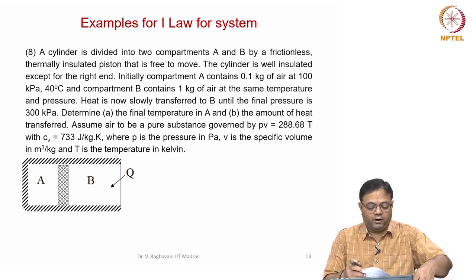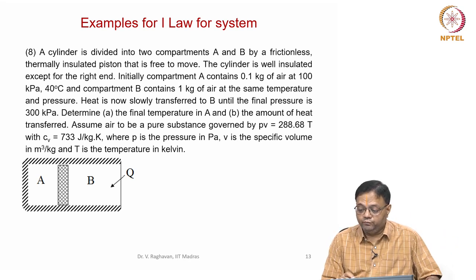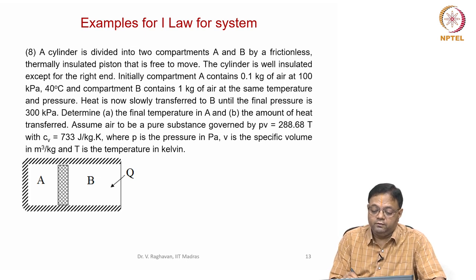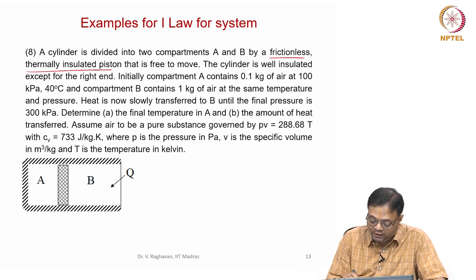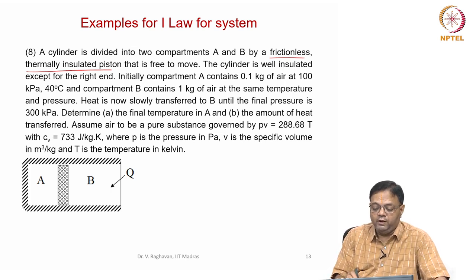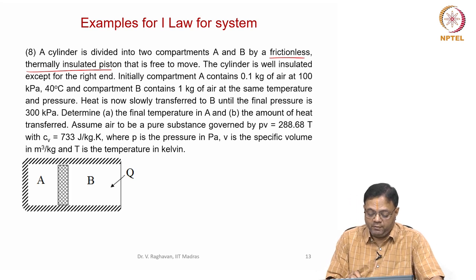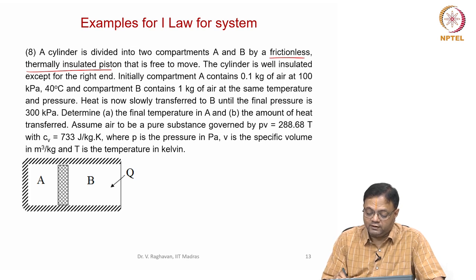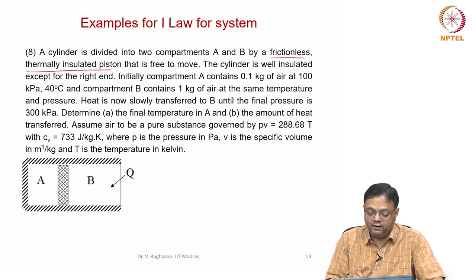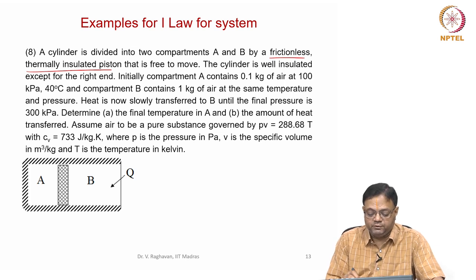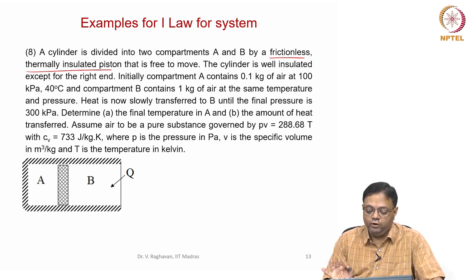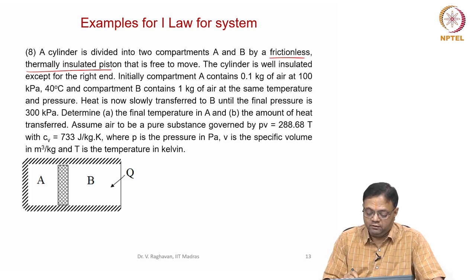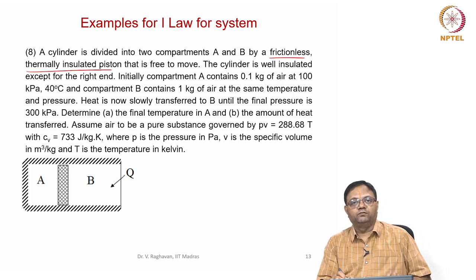Problem number 8: the cylinder is divided into two compartments A and B. There is a frictionless, thermally insulated piston — frictionless and thermally insulated, so heat cannot cross from A to B or B to A. The cylinder is well insulated except at the right end where heat transfer can occur. Compartment A is fully insulated on all sides including the piston.